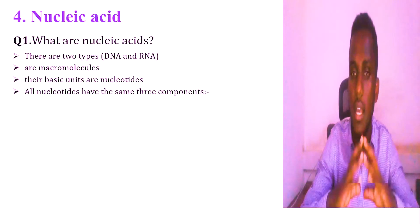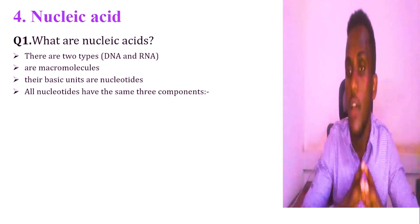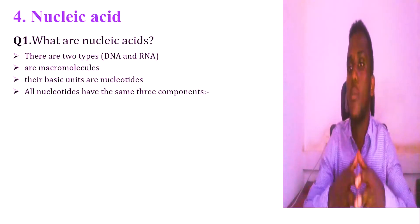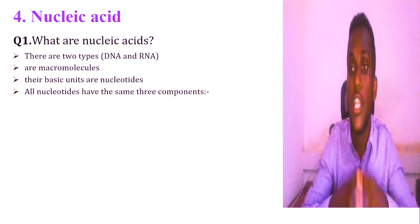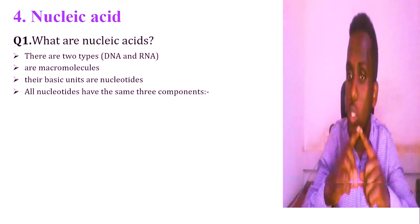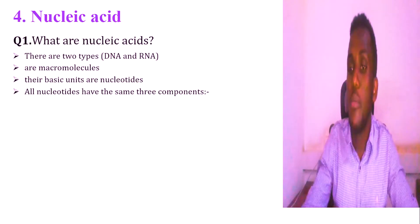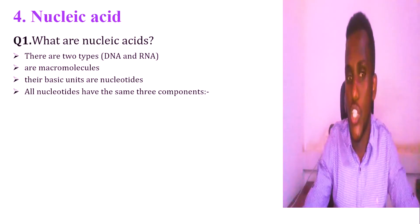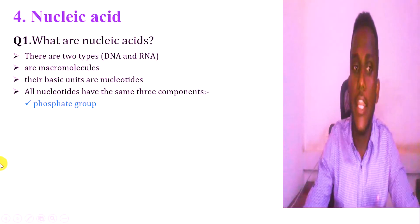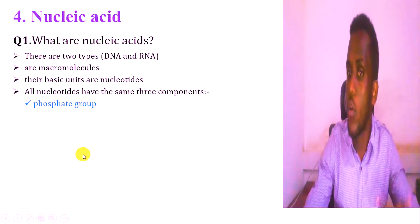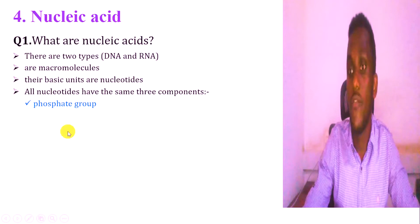Nucleic acid is the genetic material. The nucleic acid building blocks are nucleotides. Nucleotides are the source component. This is the phosphate group — PO4 minus — the phosphate group.